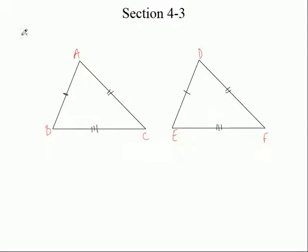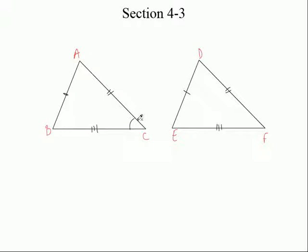Now when I say corresponding angles, we're not talking about two parallel lines cut by a transversal. We're not talking about those corresponding angles. But they kind of have the same meaning — they're the ones that match up with each other. So look at angle C. We'll put one arc here, just because it's across from the side with one arc. Angle C would equal angle F. This has two arcs — we'll put two right here. Angle B would equal angle E. And angle A would equal D. So all the corresponding angles are equal.